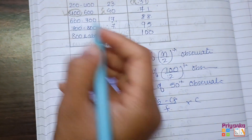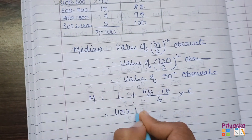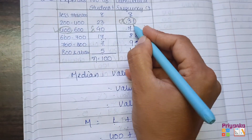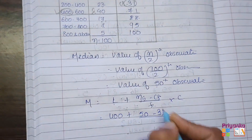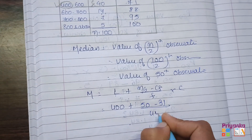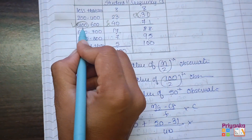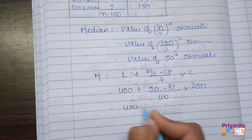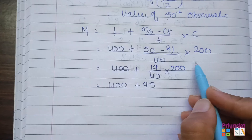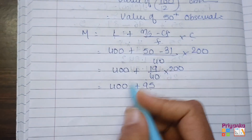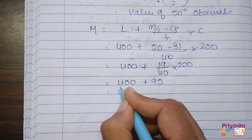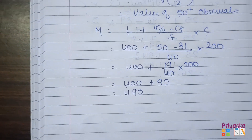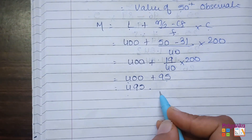The lower limit is 400. n upon 2, just now we found, is 50. The cumulative frequency before the median class is 31. The frequency is 40. The class length, 400 to 600, is 200. So the calculation gives 95, which we add to 400, giving 495. So the median is 495.